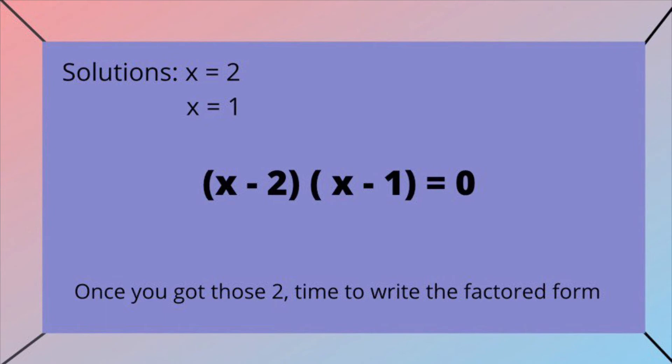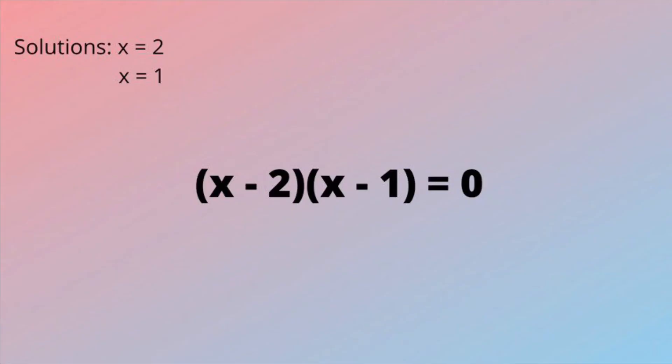time to write the factored form. Here's how it goes. X minus your first term times X minus your second term.